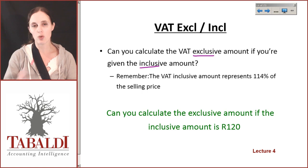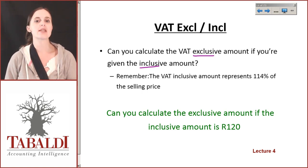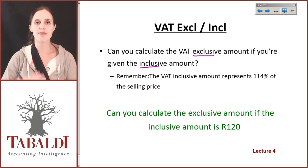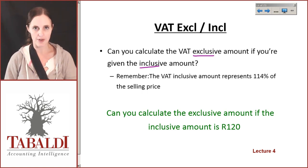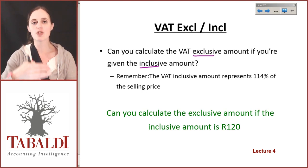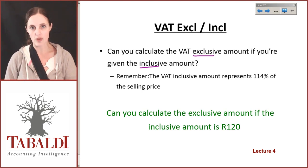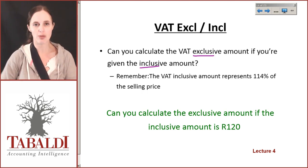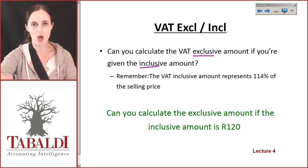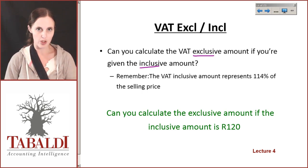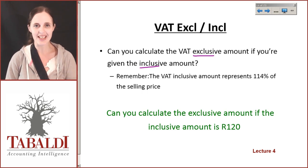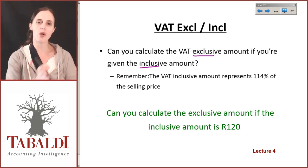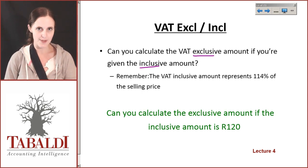What we did in the previous video: if I want to sell an item for 80 rand, I have to add 14% onto that and sell the item for 91 rand 20. But what if you are only given the inclusive amount and someone says to you, tell me what that would be excluding VAT?